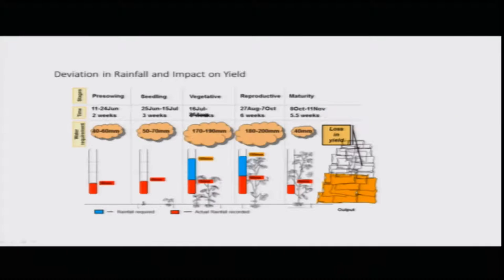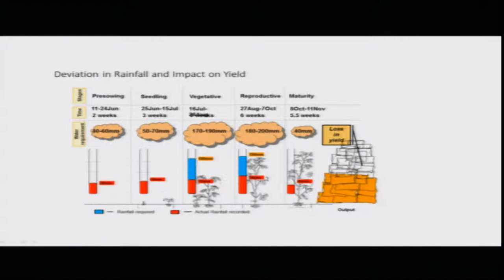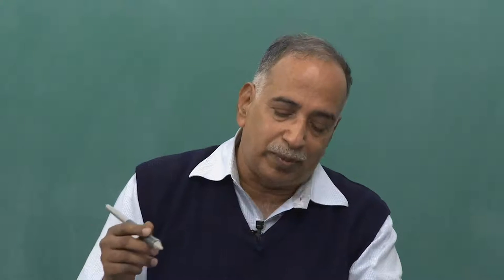We need to understand what forecasts are available and why forecasting is important for agriculture to assure crop yield. Looking at rainfall deviation and its impact on yield, there are five groups during crop growth: pre-sowing, seedling, vegetation, reproductive stage, and maturity. Once you have decided on a crop, all these stages must be fruitful to assure yield.